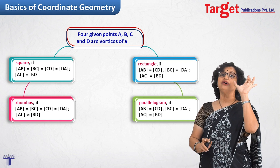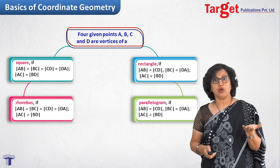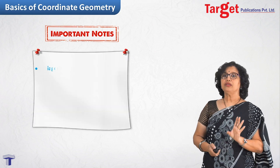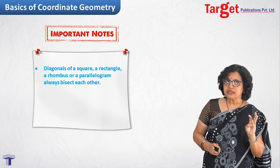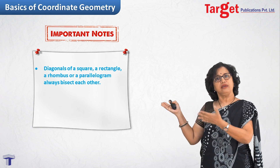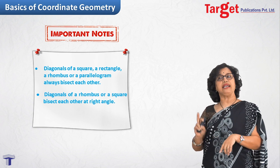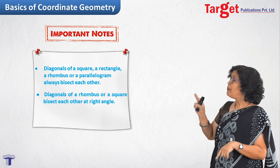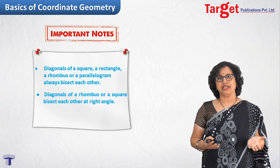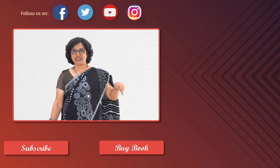Important notes: the diagonals of a square, rhombus, rectangle, and parallelogram all bisect each other. Additionally, the diagonals of a rhombus and a square not only bisect each other but do so at right angles — the angle between the diagonals is 90°. This covers the basics of Coordinate Geometry part 1. Hope you enjoyed the session. Please subscribe and click to order the book. Thank you.